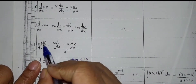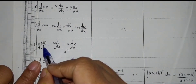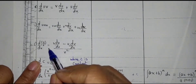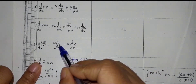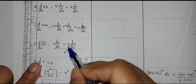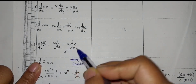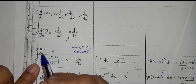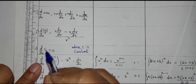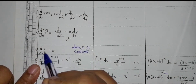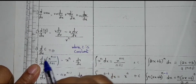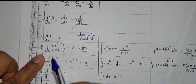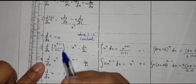The sixth formula: d upon dx of u upon v is equal to v du upon dx minus u dv upon dx, all upon v squared. Next, the derivative of a constant: d upon dx of c is equal to zero, where c is a constant.